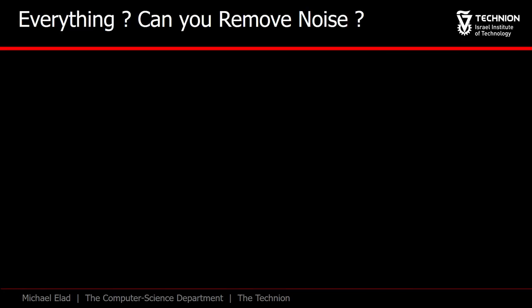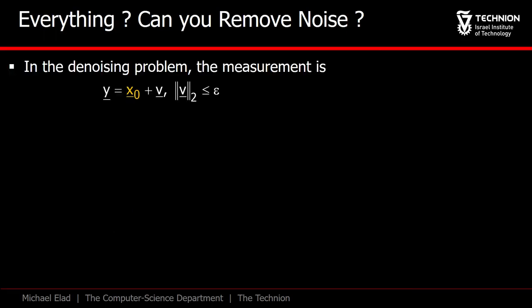Really? Everything? Let's try to remove noise from such an image using this function. We start by defining our goal. x0 is an ideal image, and y is a contaminated version of it, where the additive noise v has bounded energy epsilon.